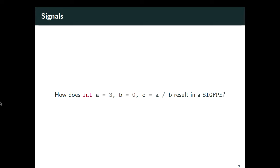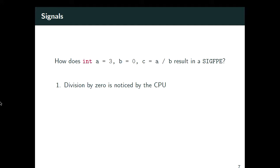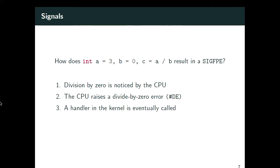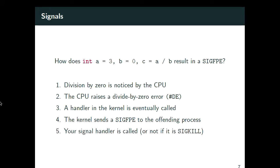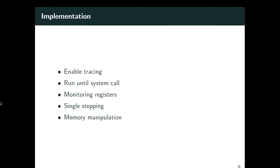Before going into ptrace, it's important to understand how signals work, because they're very important to ptrace. In this example, a division by zero is noticed by the CPU, which raises a divide error — an internal state — and eventually calls an interrupt line into the kernel. The kernel figures out the offending process and sends SIGFPE, the signal for division by zero. Your signal handler is called if you're lucky; if it's SIGKILL, you're terminated.